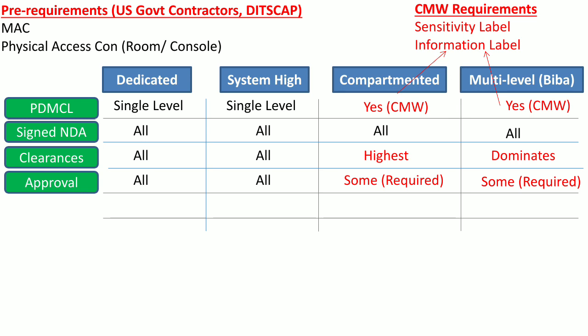The next attribute is access approval. When the system is deployed in dedicated or system-high security mode, the user should have access approval for all the data processed by those systems, since both modes process data at a single classification level. But when the system is operating in compartmented or multi-level security modes, the user requires access approval for only specific data, and the rest of the data is restricted to that user.